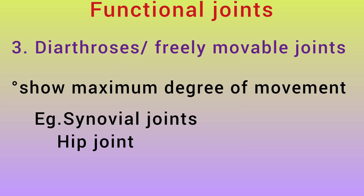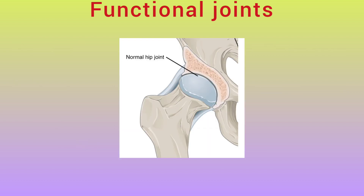Diarthrosis refers to freely movable joints — they show the maximum degree of movement. For example, the synovial joint such as the hip joint. If you look at the movements: flexion, extension, abduction, adduction, rotation. So that covers functional joint classification.